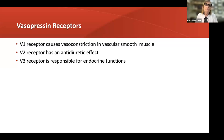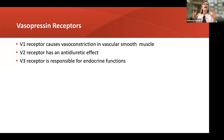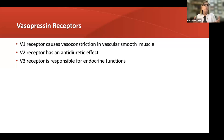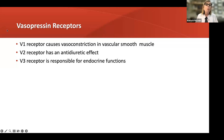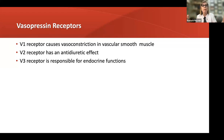Vasopressin receptors: vasopressin is made in the hypothalamus and released in the pituitary — we used to call it antidiuretic hormone until we realized it had many properties. The highest receptor affinity is in the V1 receptor, which promotes vasoconstriction in vascular smooth muscle and sets up a situation where receptor sites are more responsive to circulating catecholamines. V2 receptors promote antidiuresis. V3 receptors are responsible for some endocrine functions as well as platelet aggregation. We use a relatively low dose that we do not titrate, to saturate the V1 receptors promoting vasoconstriction.